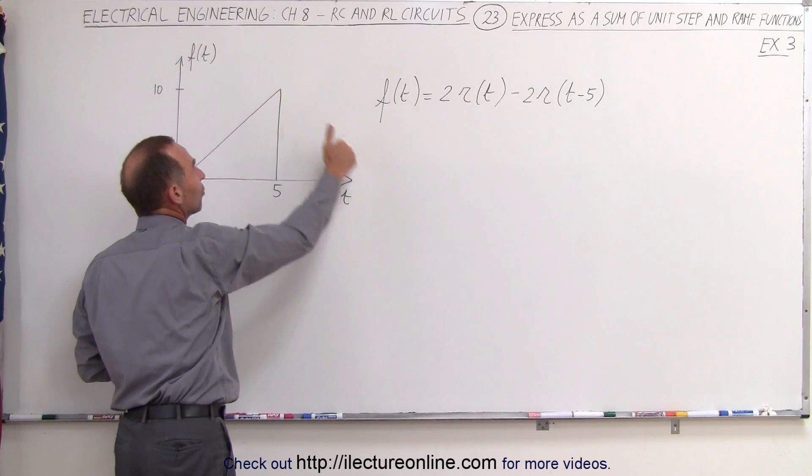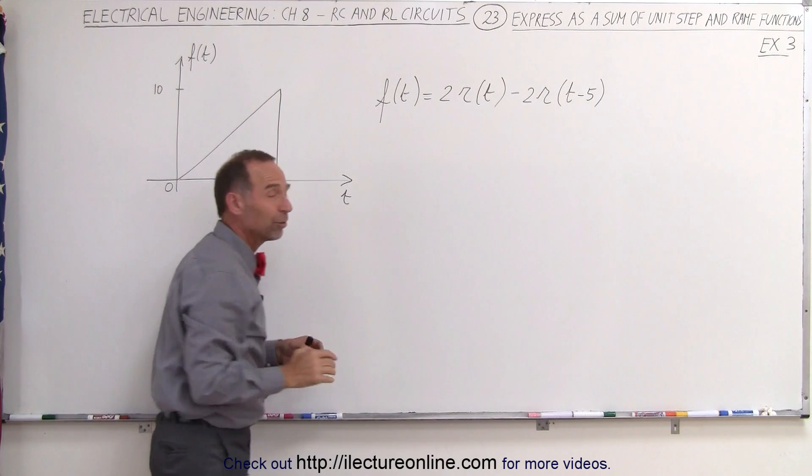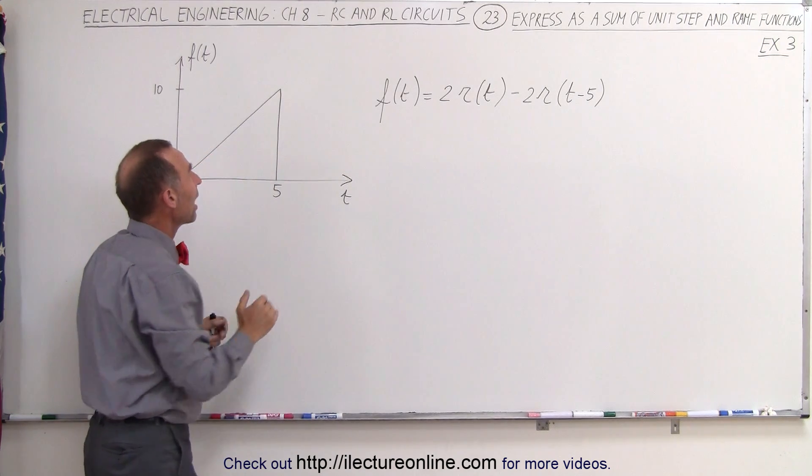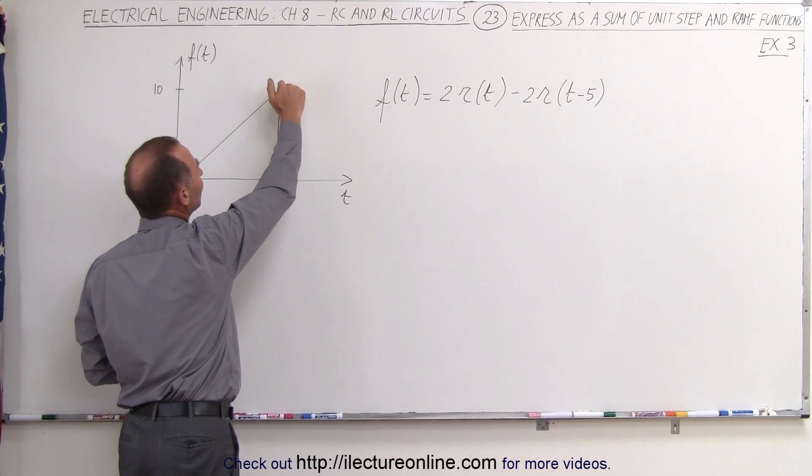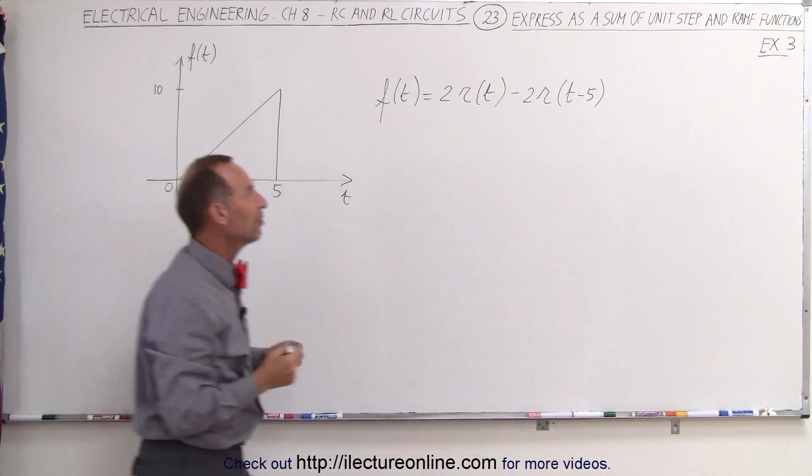If you double this you will continue in this fashion like we saw in the previous example, so that won't work either. Somehow, since we're up here with an amplitude of 10, we need to bring it down to 0. We can do that by adding a negative step function.